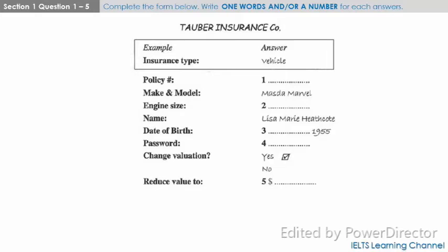You will hear a telephone conversation between a male insurance agent and a female client who wants to make changes to her policy. First, you have some time to look at questions 1 to 5. You will see that there is an example that has been done for you. On this occasion only, the conversation relating to this will be played first.